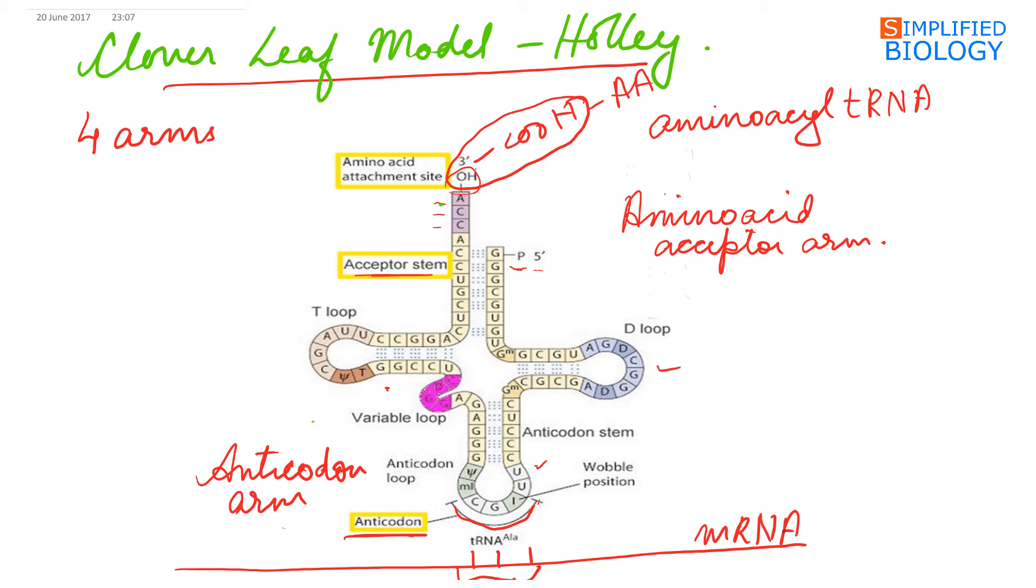The third is the T-loop or T-psi-C loop, as it has thymine, pseudouridine, and cytosine in its unpaired loop. It is the site for the attachment of aminoacyl tRNA synthetase enzyme, required for the formation of aminoacyl tRNA.